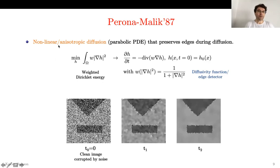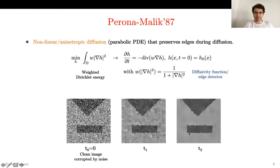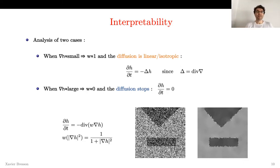Perona and Malik proposed an anisotropic diffusion process. The idea is to weight the Dirichlet energy by a diffusivity function, which is an edge detector. Applying calculus of variation to minimize this energy gives the PDE: ∂h/∂t = div(w(∇h) · ∇h). Running this flow at time t₂, you smooth the noise in homogeneous parts while preserving the discontinuities. Differential equations are interpretable and we can analyze two cases here.